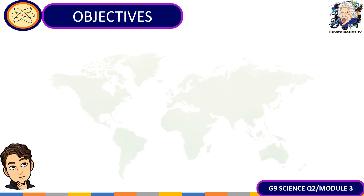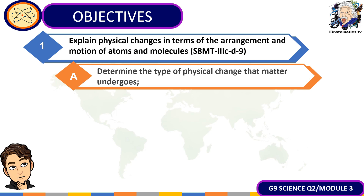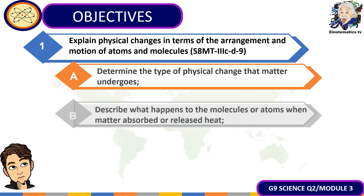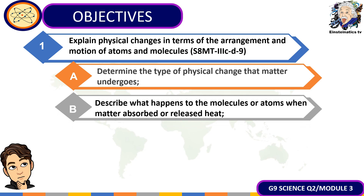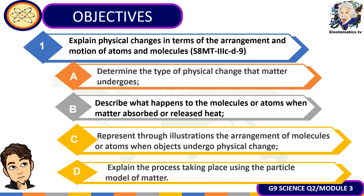For today's video, we will be guided with the following objectives. First, we are going to explain the physical changes in terms of the arrangement and motion of atoms and molecules. Another objective is to determine the different kinds of physical change that matter undergoes. We will also describe what happens to molecules or atoms when matter absorbs or releases heat. We will represent through illustrations the arrangement of molecules or atoms when objects undergo physical change, and explain the process using the particle model of the atom.